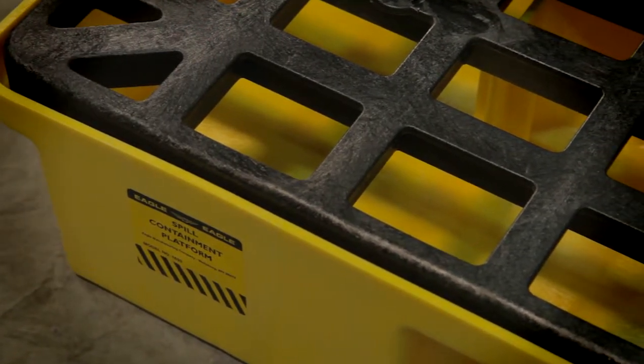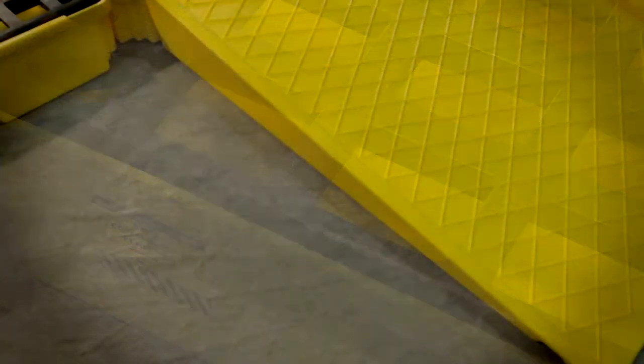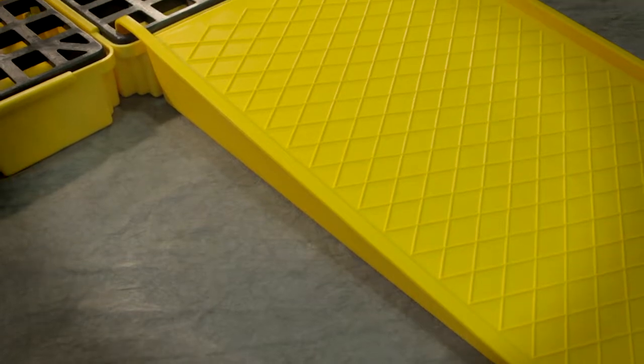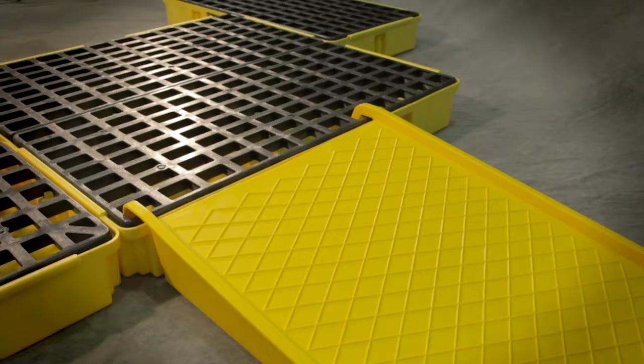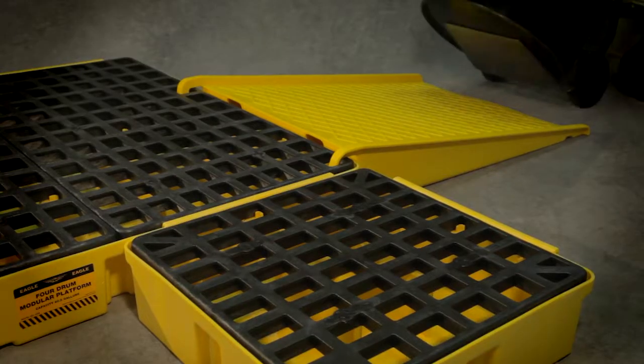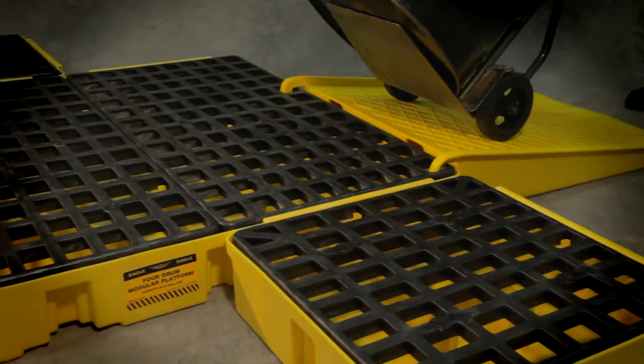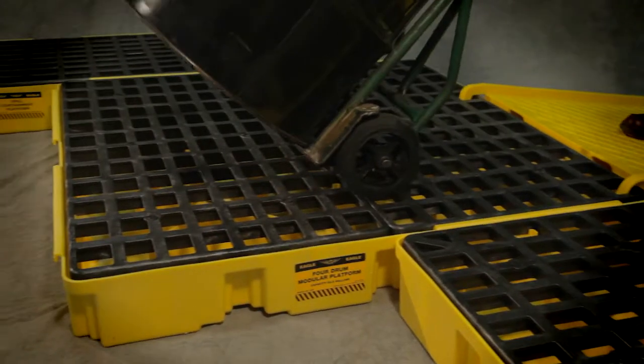The strength of the design and the structural polyethylene foam enables Eagle to achieve greater load capacity and greater sump capacity in a smaller footprint than traditional containment pallets and platforms. These modular platforms are manufactured with a low profile.